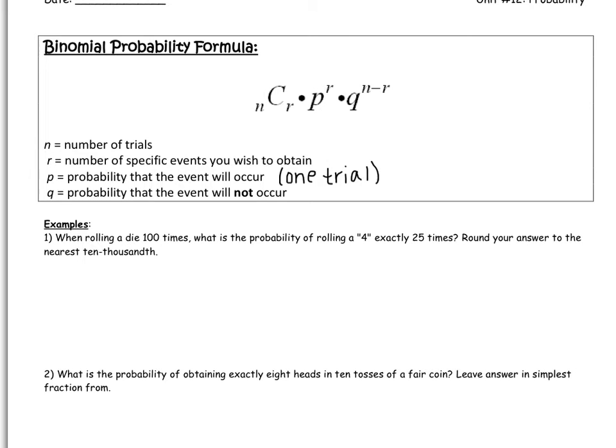Let's read example one. It says, when rolling a die 100 times, what is the probability of rolling a 4 exactly 25 times? So exactly 25 out of the 100. So if we think about it, the number of trials that we have in this problem right here is 100. Because we are rolling the die 100 times. So that's my N.